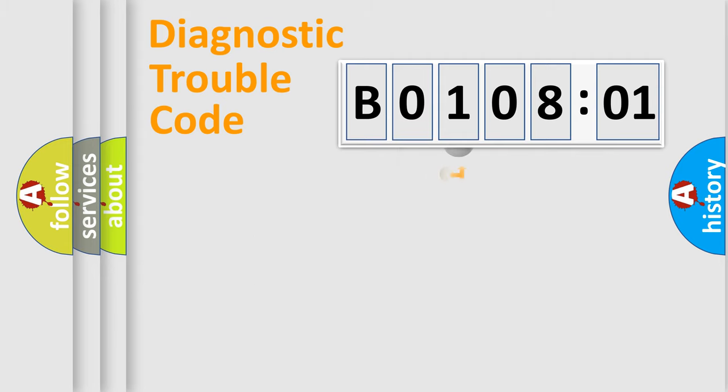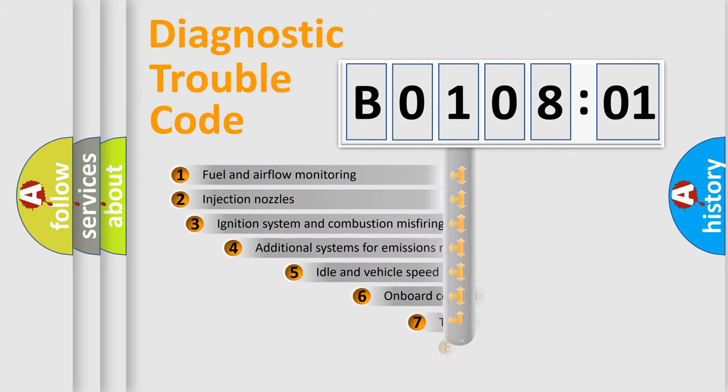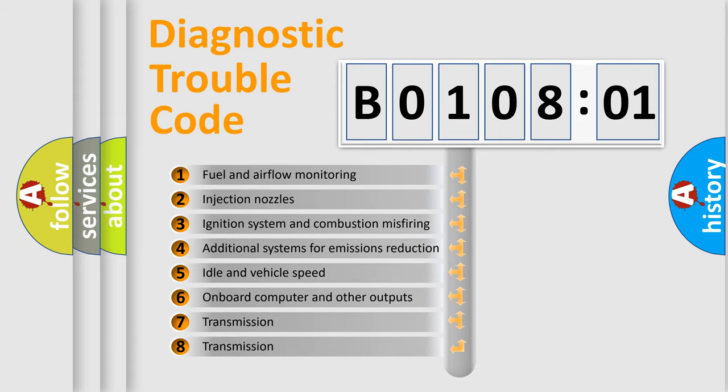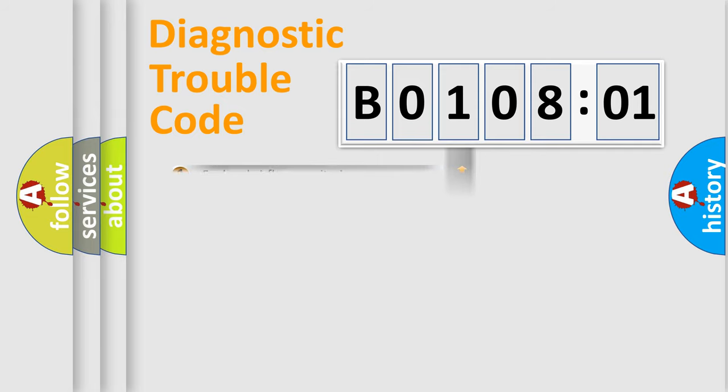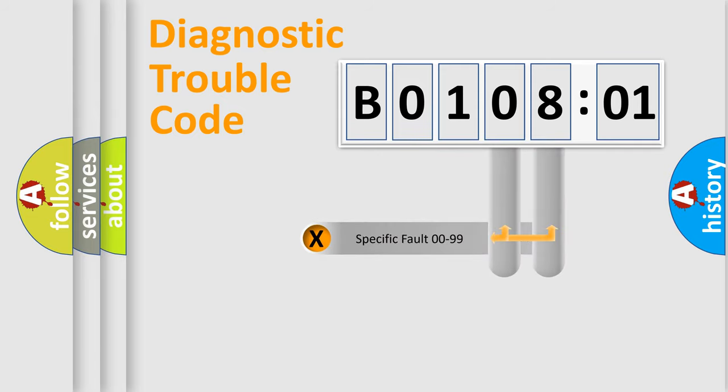The third character specifies a subset of errors. The distribution shown is valid only for the standardized DTC code. Only the last two characters define the specific fault of the group.